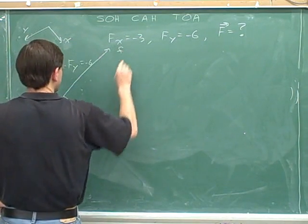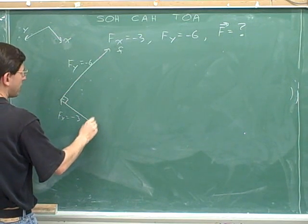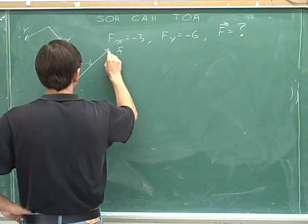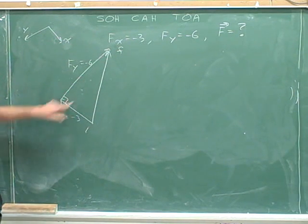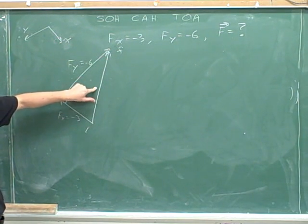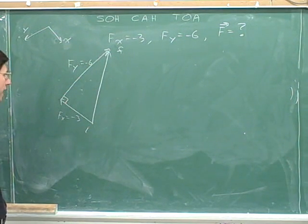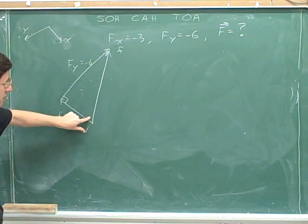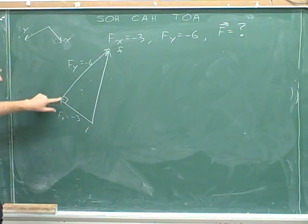Now we should draw the overall vector. This is the initial point because this is where the x component began, and this is the final point — this is where the y component ended. So here's the overall vector. The overall vector did not come out to be vertical, and there's no reason it should, because the x and y components are not exactly balancing each other. This is not a 90-degree angle here; the 90-degree angle is between the components themselves.